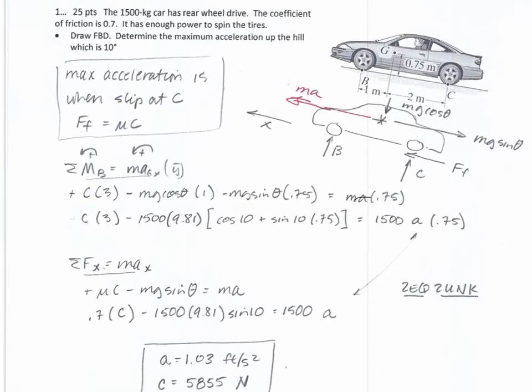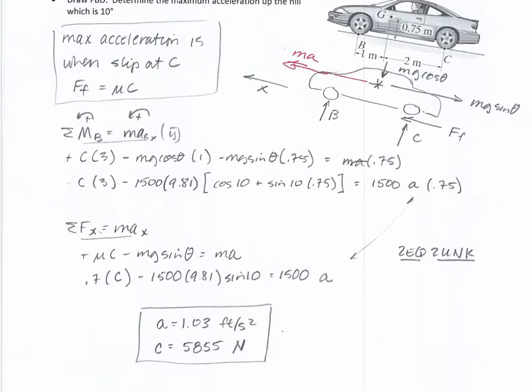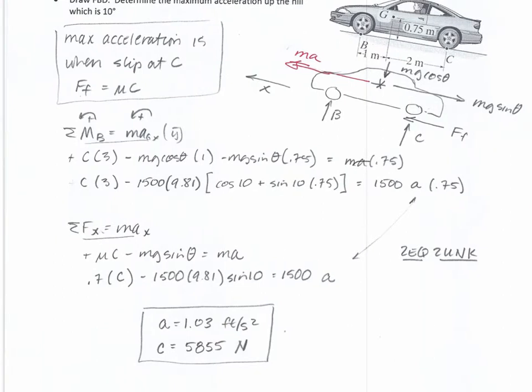The force equation: sum of forces in X equals mass times acceleration in X. Mu_C drives it forward, mg sine theta goes down the hill, giving MA. Two equations, two unknowns — solve for the acceleration and the normal force at C. For grading: the free body diagram is worth four points, understanding that slip condition happens at C is five points, the force equation was six points, and the moment equation was ten points.